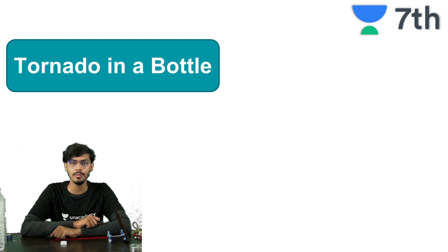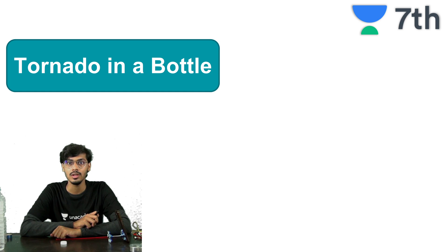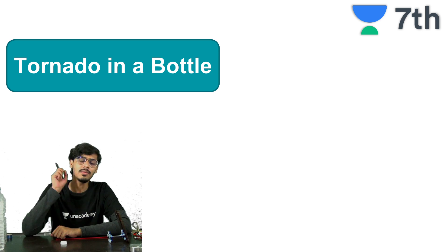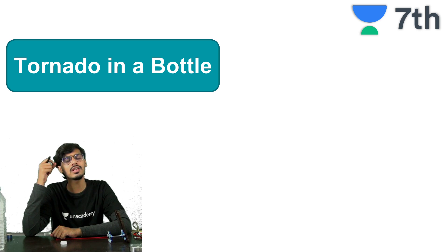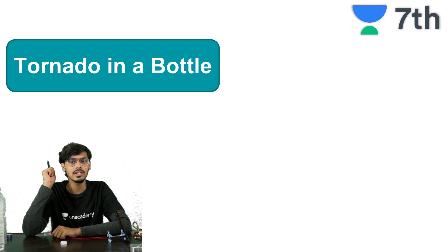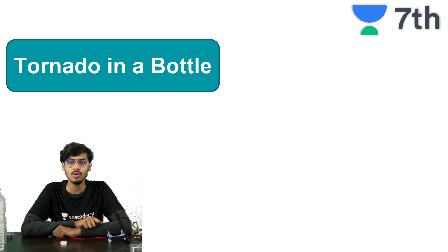One of the natural phenomena which happens because of this is a cyclone, and cyclone as you know happens because of low air pressure and high speed winds. Similar to the cyclone, there is another phenomenon which is not very common in India but in North America it is very common, and it is called a tornado.